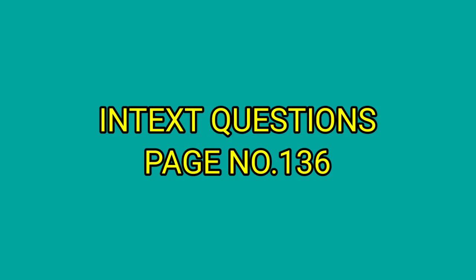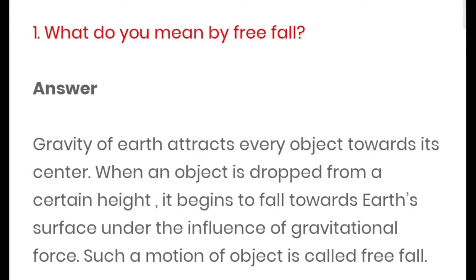Now let's discuss index questions of page number 136. See the first question: what do you mean by free fall? Answer: gravity of earth attracts every object towards its center. When an object is dropped from a certain height, it begins to fall towards earth's surface under the influence of gravitational force. Such a motion of object is called free fall.